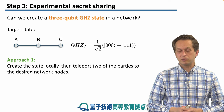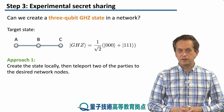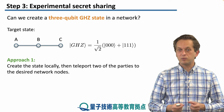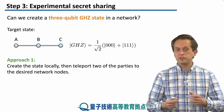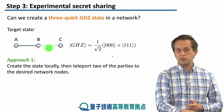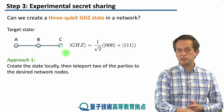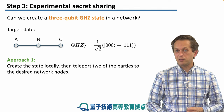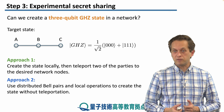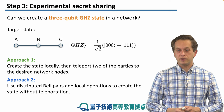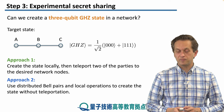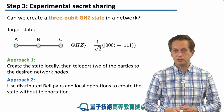There are two approaches to creating a GHZ state. The first is to create the state locally at one of the nodes and then teleport two of the qubits to the desired parties — create it at A, teleport one qubit to B and another to C, while A retains the remaining qubit. Approach two uses distributed bell pairs and local operations to create the state without teleportation.